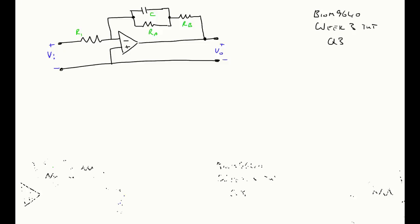Okay, last question in BION 9640 Week 3 Tutorial. This is a filter, it's an active filter. We can see it's a, well I hope you can see. Go back and look at the notes. It's an inverting amplifier configuration. We have an impedance in the forward path or in the input path here and we have an impedance in the feedback path.